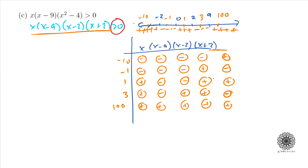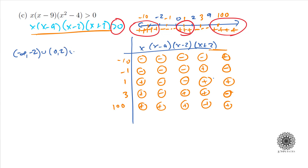Looking at my sign chart, I can see where the expression is positive. Note that the test values themselves are not the answer — those had nothing to do with the actual zeros of the expression. My answer is going to be the union of negative infinity to negative 2, then 0 to 2, and then 9 to infinity. This union symbol means I'm joining these intervals together, so I have three pieces combined.